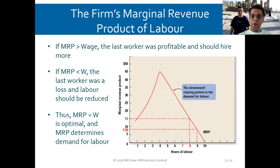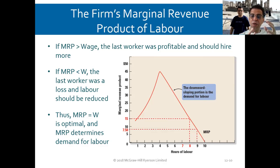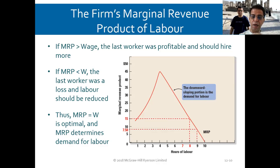The firm's marginal revenue product of labor: if the MRP is more than the wage — say you're paying $10 but the worker is producing an extra product worth $15 — then the MRP is higher than the wage, meaning the last worker was profitable and you should hire more. If the MRP is less than the wage, the last worker was a loss and labor should be reduced. Thus, MRP equal to the wage is the optimal, and the MRP determines the demand for labor.